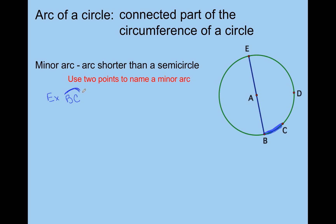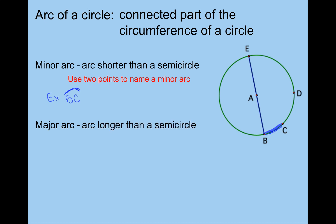Someone could have named that arc CB as well, and that would be perfectly okay. Now, how about the major arc? A major arc is an arc that's longer than a semicircle. We're going to use three points to name the major arc. This blue part is the minor arc; the rest that is left over is a good example of a major arc. Every minor arc has a major arc that goes along with it.